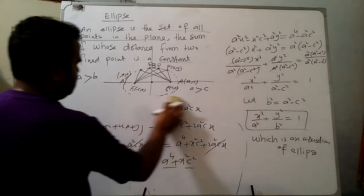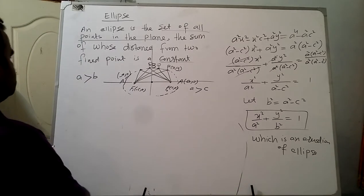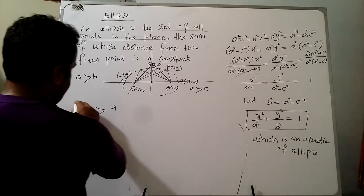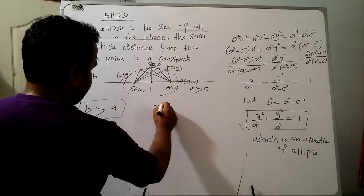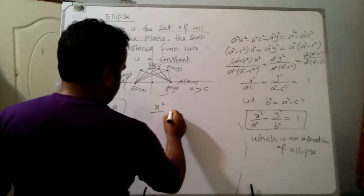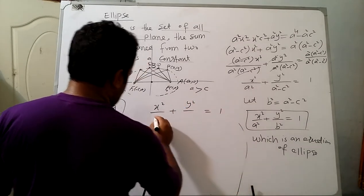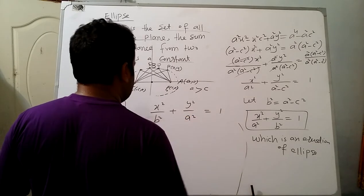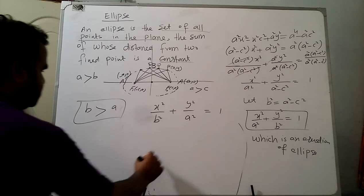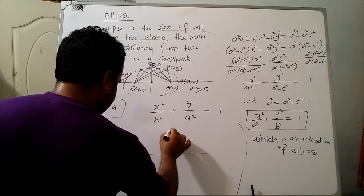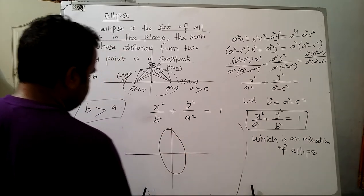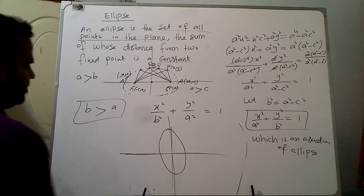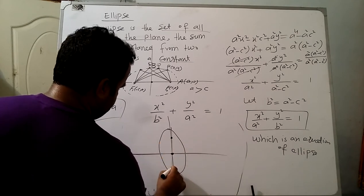If b > a, then the equation becomes x²/b² + y²/a² = 1. In this case the major axis is along the y-axis and the minor axis is along the x-axis. The center of the ellipse and the foci remain at the origin and on the axes respectively.